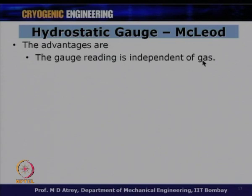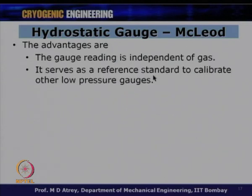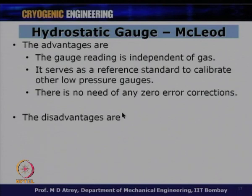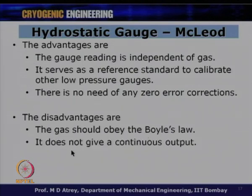Advantages of the McLeod gauge: the reading is independent of the gas used; it serves as a reference standard to calibrate other low pressure gauges; and there is no need for zero error corrections. Disadvantages: the gas must obey Boyle's law (i.e., behave as an ideal gas); and it does not give a continuous output — the measurement must be taken manually each time.